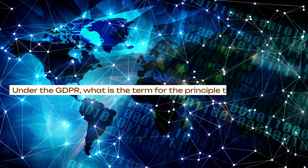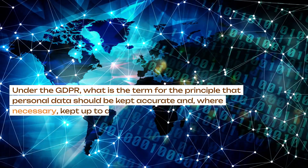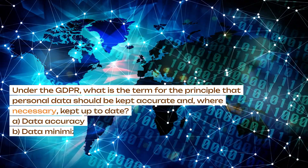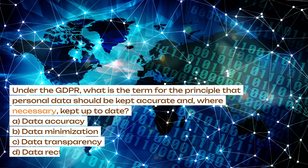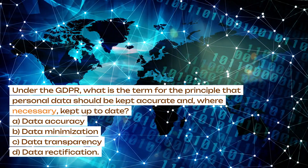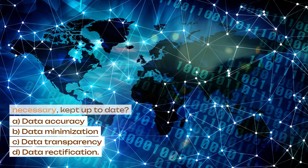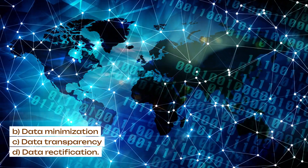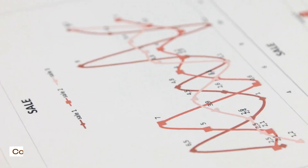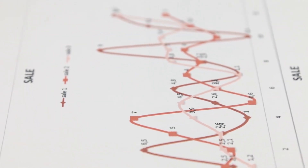Under the GDPR, what is the term for the principle that personal data should be kept accurate and, where necessary, kept up to date? A. Data accuracy. B. Data minimization. C. Data transparency. D. Data rectification. Correct answer: A. Data accuracy.